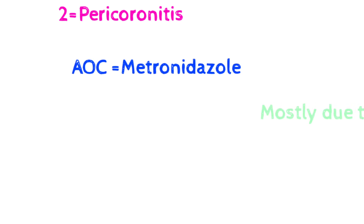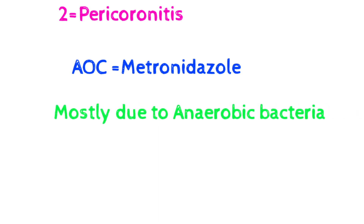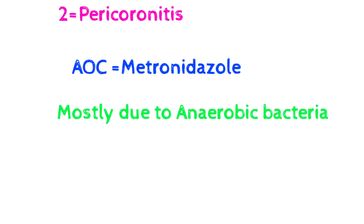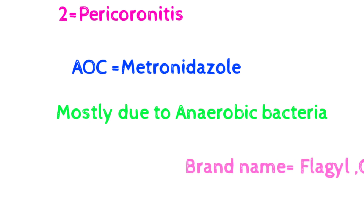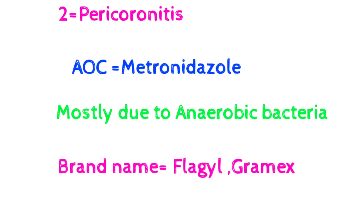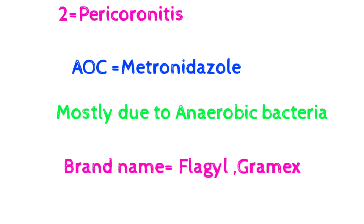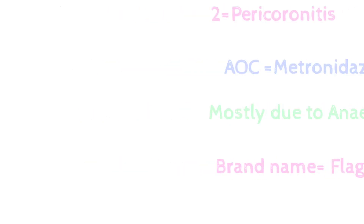In pericoronitis, the antibiotic of choice is metronidazole, because pericoronitis mostly occurs due to anaerobic bacteria, and for anaerobic bacteria we always give metronidazole. The brand names of metronidazole are two: number one is Flagyl and number two is Gramax.